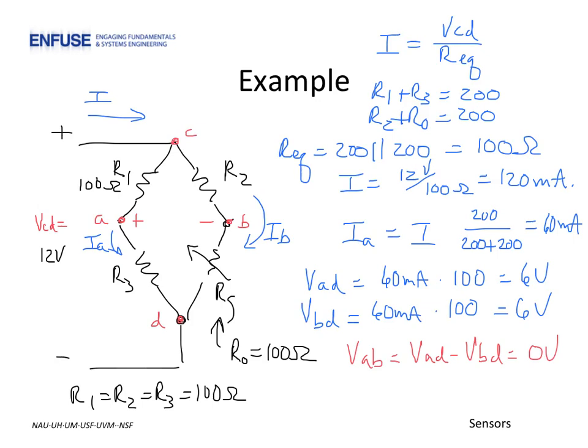Now let's suppose a tensile load is applied, causing the resistance of the strain gauge to increase by only 1%, or 1 ohm. Let's redo the analysis. The total resistance is now a 201 ohm resistance in parallel with 200 ohms, giving a total resistance of 100.25 ohms. A very small change, but enough to change the total current from 120 milliamps to 119.7 milliamps.